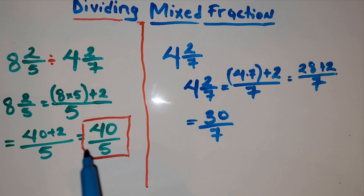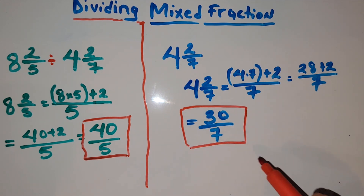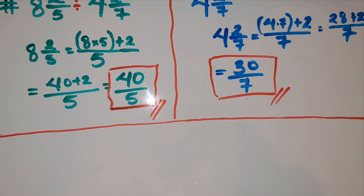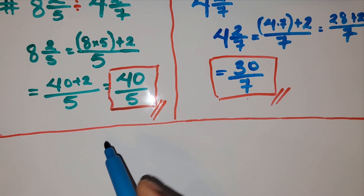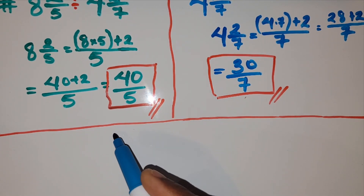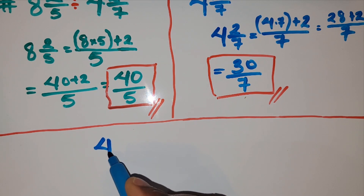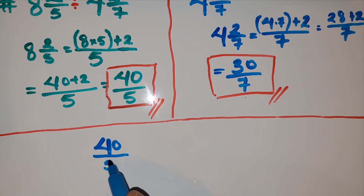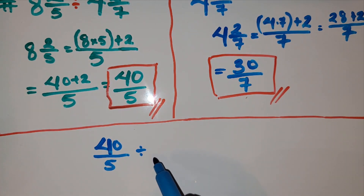Our first step in dividing mixed fractions is to convert to improper fractions, and now we have both sides as improper fractions. We have an improper fraction on each side. So the next step: we bring our problem down as 42 over 5, divided by 30 over 7.